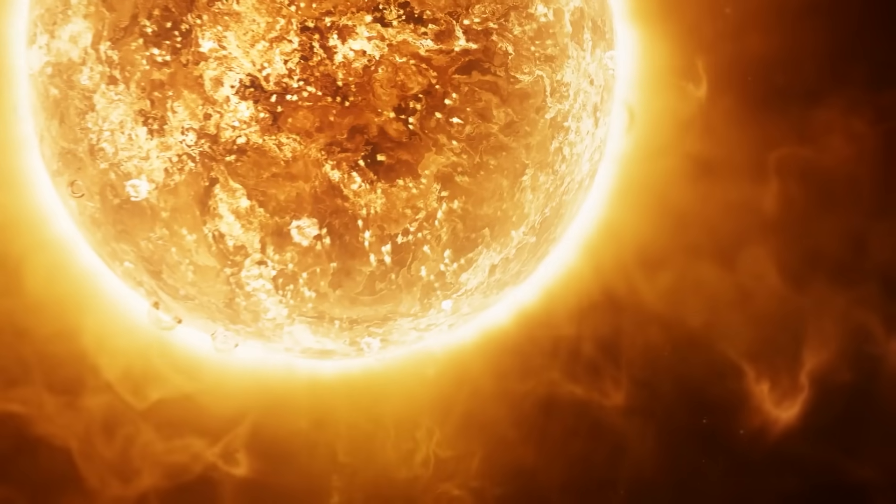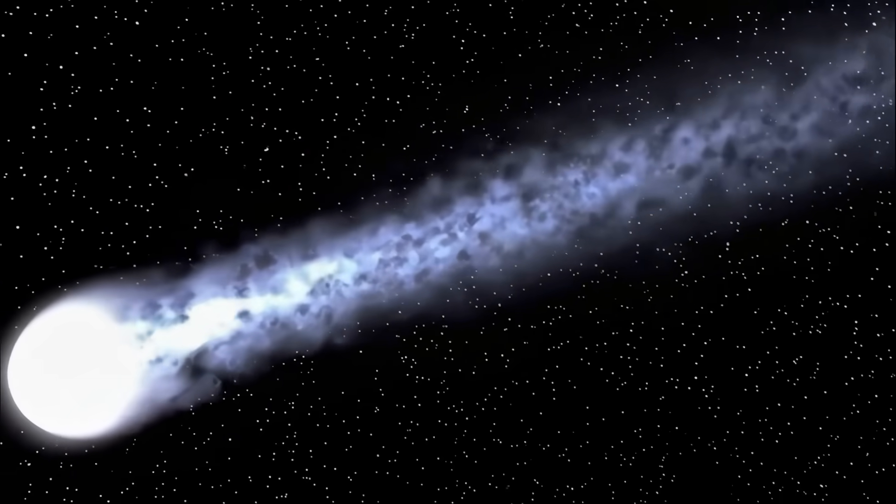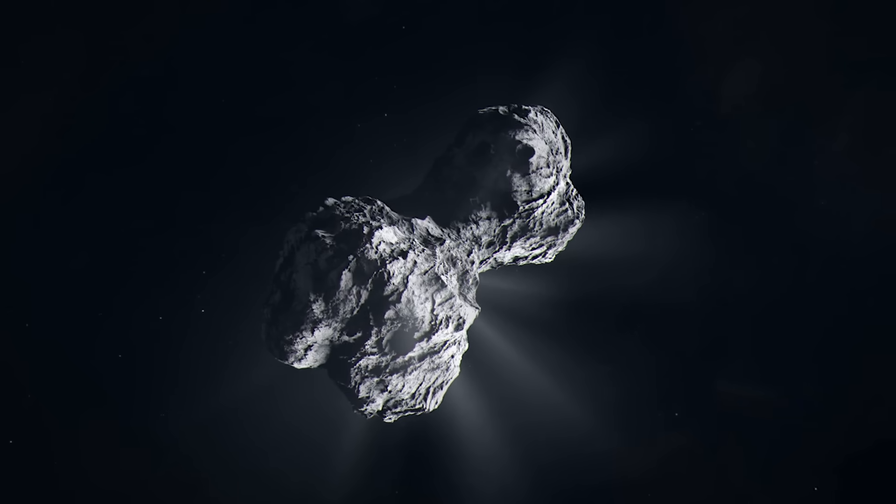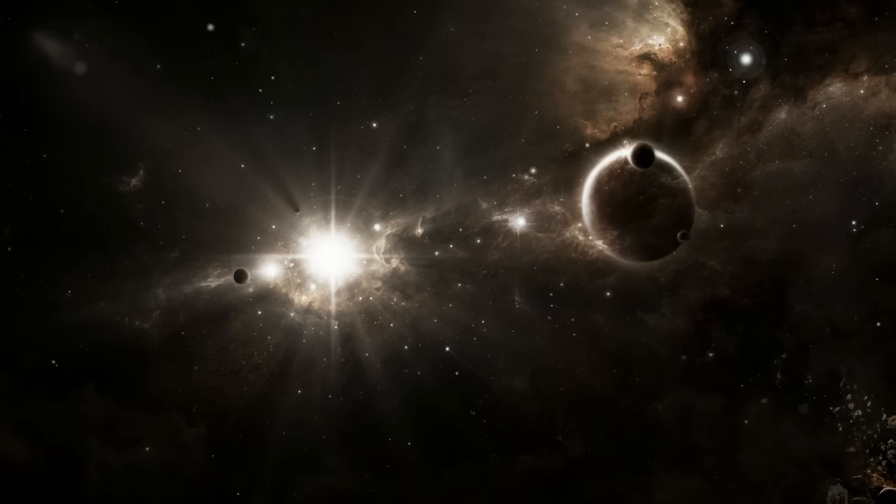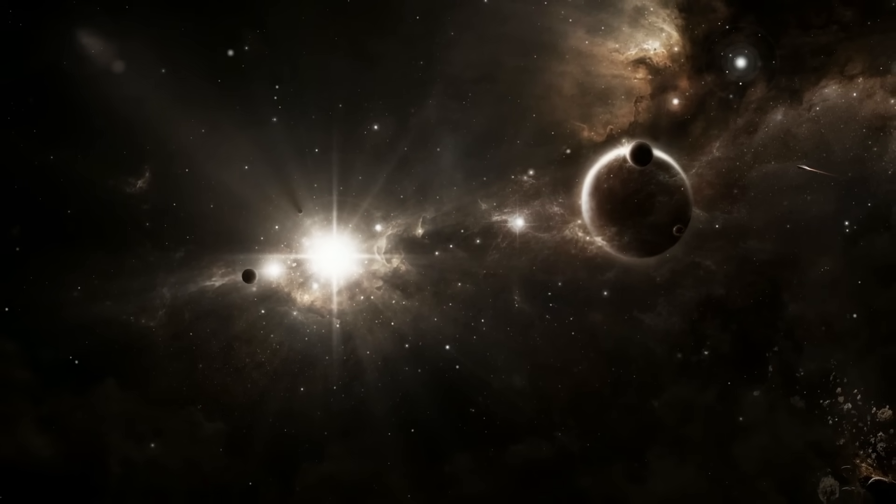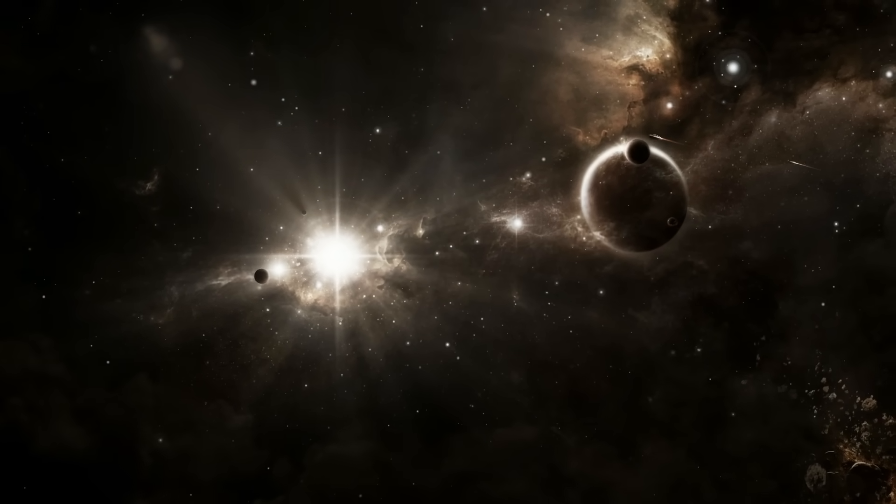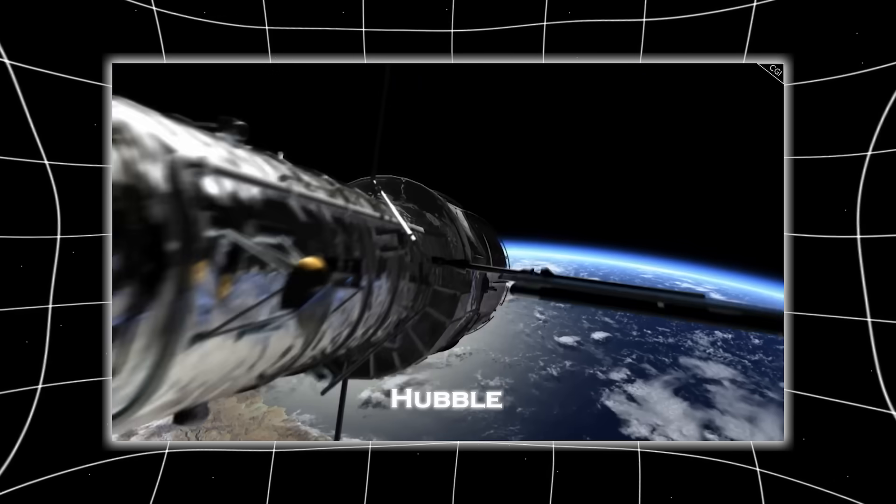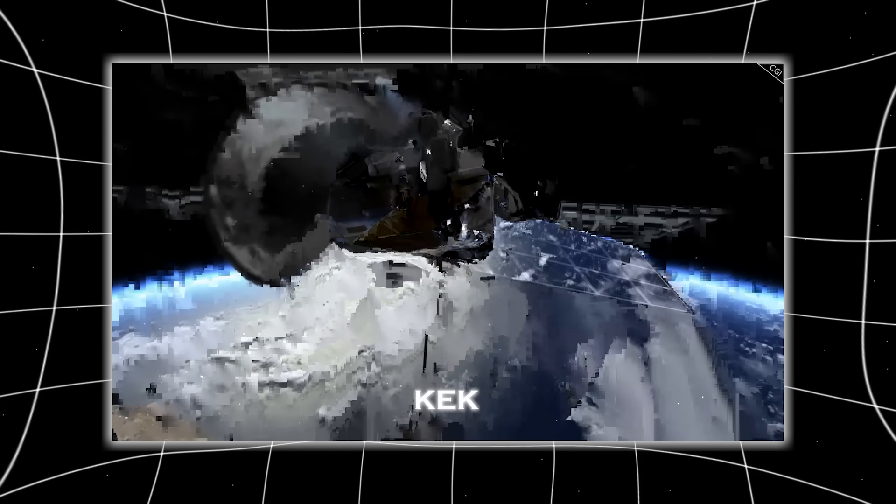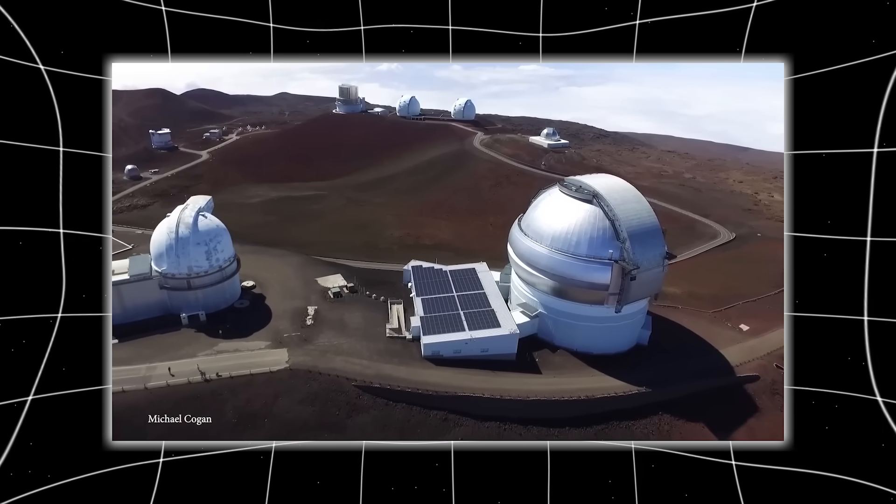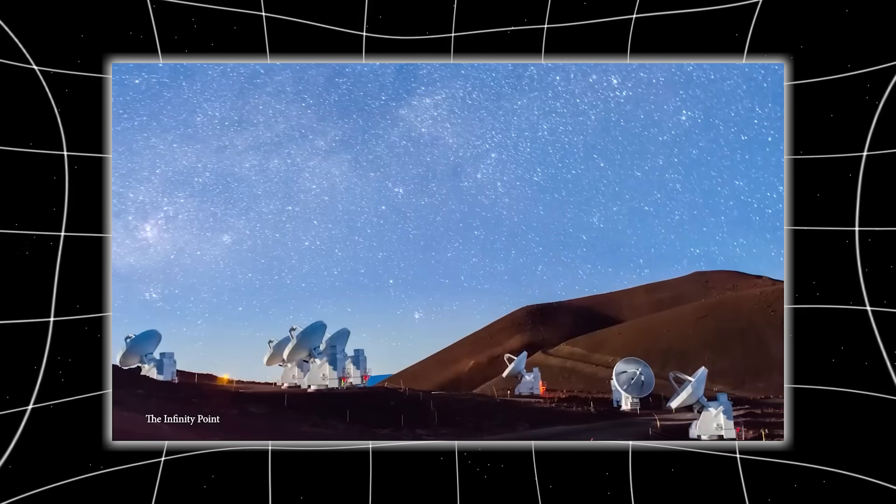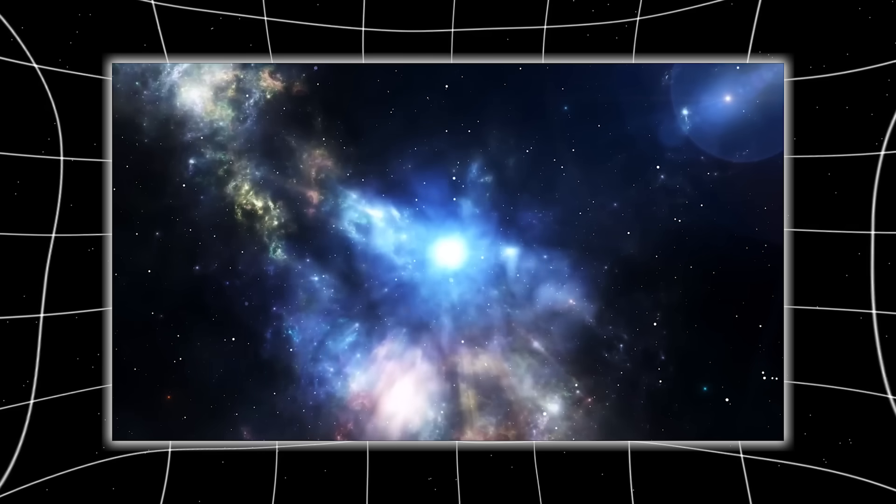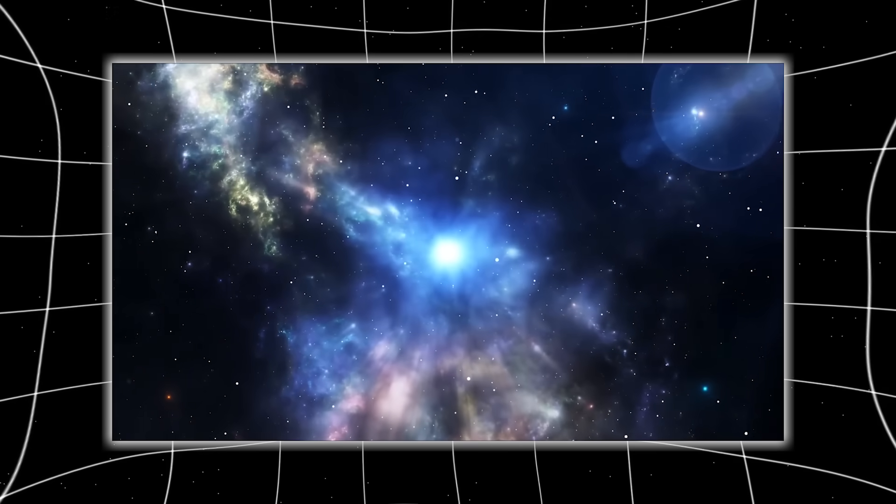When comets approach the sun, they grow tails - long streams of dust and gas pushed away by sunlight, always pointing opposite the glare. But Three-I-Atlas rejected that rule the moment it re-emerged. Instead of trailing behind it, its material streamed directly toward the sun, forming a narrow anti-tail unlike anything observed. This wasn't a perspective trick. Hubble confirmed it. Keck confirmed it. European observatories confirmed it. Every telescope saw the same impossible plume holding a stable, unwavering line into the sunlight. Dust doesn't behave this way. Ice doesn't behave this way. Nothing natural does.